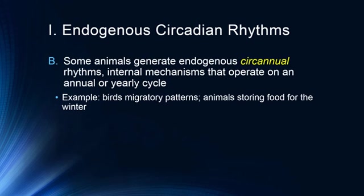Some animals generate endogenous circannual rhythms — annual rhythms based on their internal biology — internal mechanisms that operate on a yearly cycle. These include things like bird migratory patterns, food storage behaviors, hibernation for the winter, and storing fat for the winter. These are all types of circadian rhythms based on internal mechanisms as well as external environmental cues such as the position of the sun and length of the day.